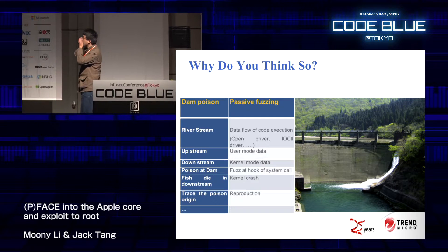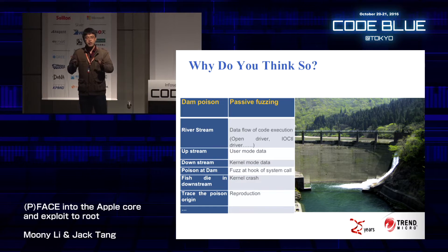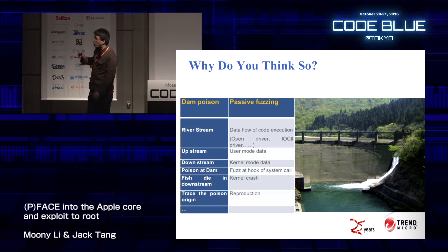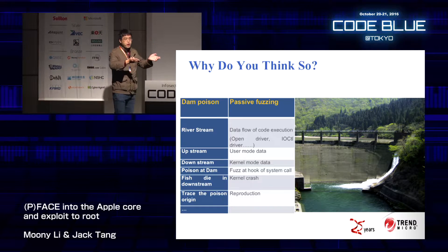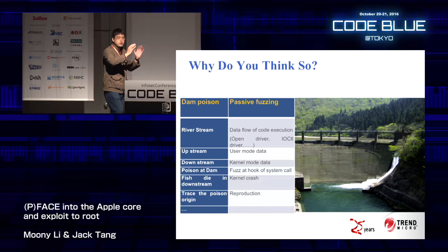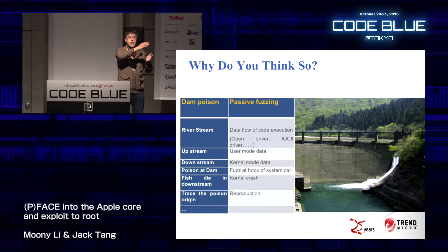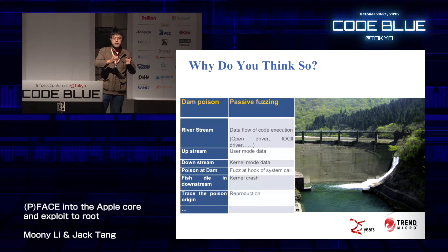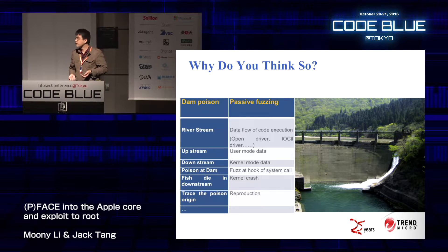How do we think of it? We can compare this passive fuzzing framework with dam poisoning. Imagine that in a river, the water in the upstream runs down to the river dam, and the river dam intercepts all the water from upstream. If we poison the dam, the poisoned data will run down to the downstream. Then all the fish in the downstream will die.